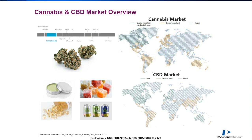Since it is a plant, we also have to understand and appreciate that there are a number of different constituents in the flower and thus the product — chlorophyll, waxes, cannabinoids, contaminants. So there's a lot of science to talk about and to understand approaches to successfully quantify these constituents.